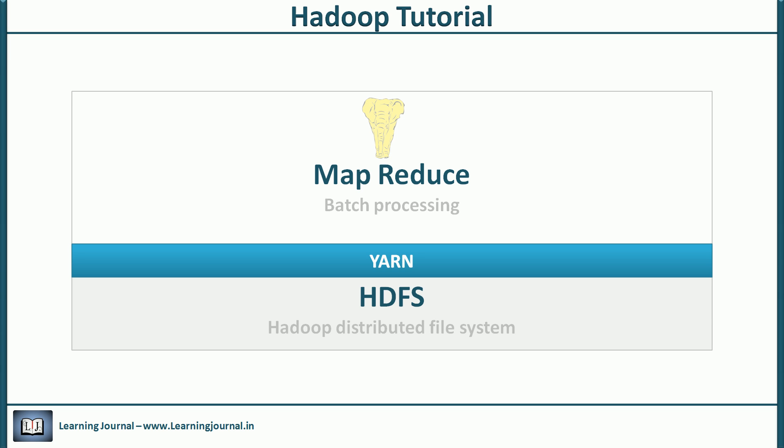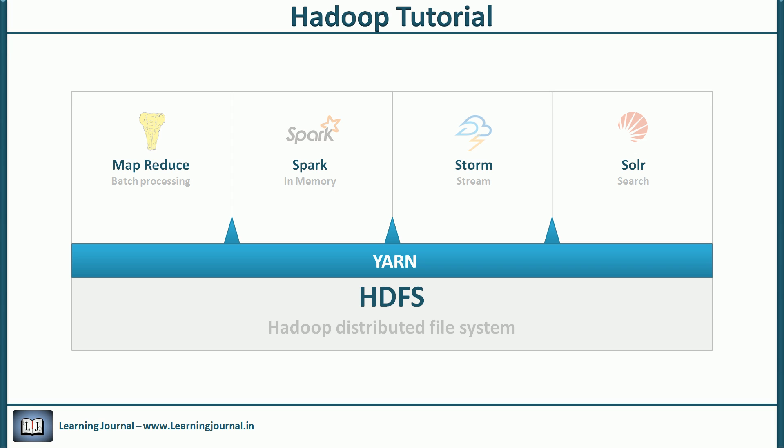You might have already realized that YARN is not a tool for application developers. The YARN APIs don't target individual developers — the target audience are the teams working towards creating a new computation engine. We already have several execution engines that work on top of YARN. Some of the popular ones are Apache Spark, Apache Storm, Solr, and Apache Tez.